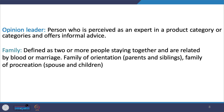Another socio-cultural influence is family, defined as two or more people staying together related by blood or marriage. Family is bifurcated into family of orientation — which includes your parents and siblings — and family of procreation — which includes your spouse and children. If you recollect your shopping experiences, you will be able to pinpoint the role family played in what you were buying and what you were not buying.